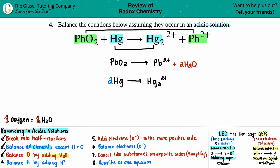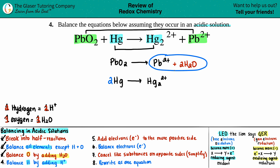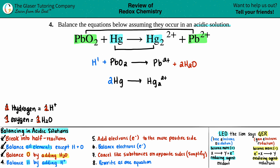Step four: balance the hydrogens by adding H⁺ — don't forget that plus, it's what makes it acidic. If you need two hydrogens, add two H⁺, and so on. On the top equation, the right side now has two H₂O, giving four hydrogens total, so I add four H⁺ on the left. The bottom equation has no hydrogens on either side, so we skip it. Step four is done.